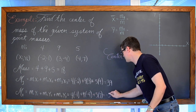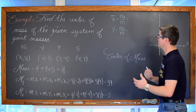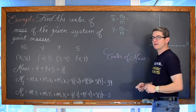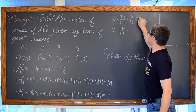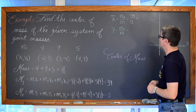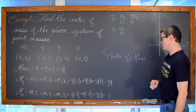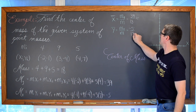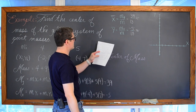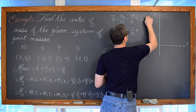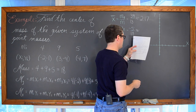Now using these values: x̄ equals the moment about the y-axis divided by mass = 39/18 ≈ 2.17. And ȳ equals the moment about the x-axis divided by mass = −5/18 ≈ −0.28. So the center of mass is approximately (2.17, −0.28).